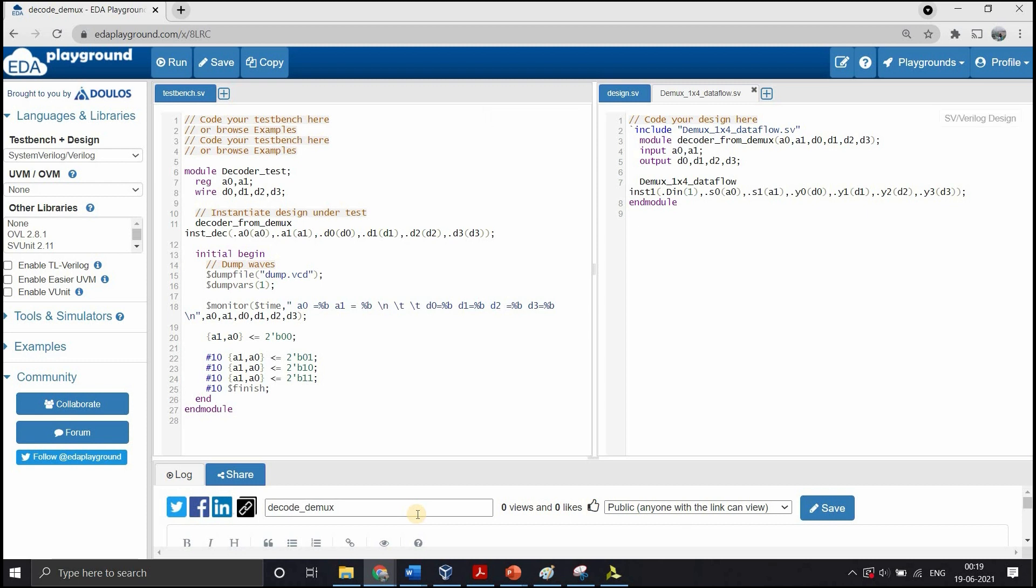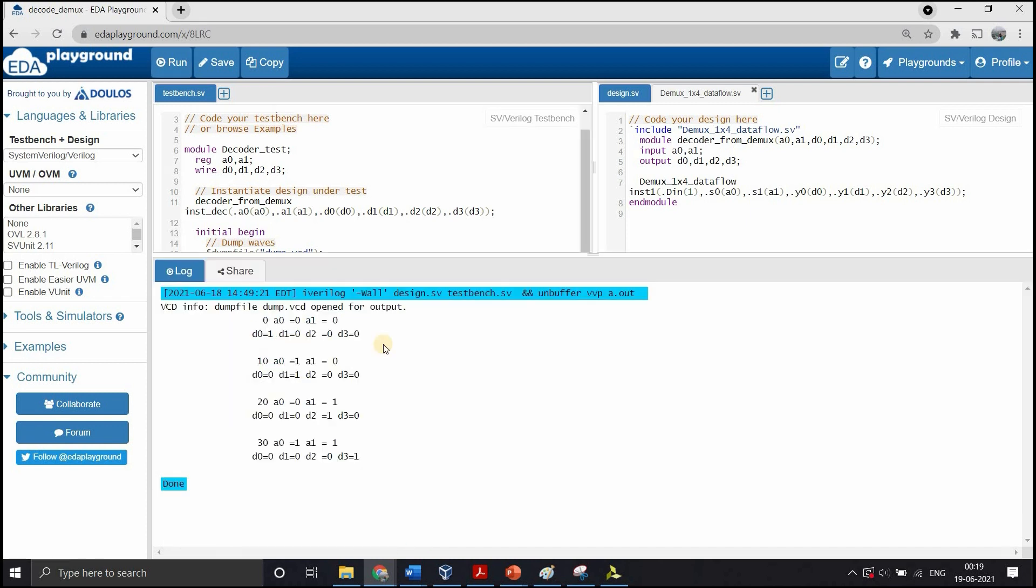This is the test bench we can run to see if it is correct. As you can see, when both A0 and A1 are 0, the data D0 is set to 1. When both are 1, D3 is set to 1. This is how a decoder must function. So we have verified that the decoder that we generated from the demultiplexer is working correctly. Let's move on to the next question.